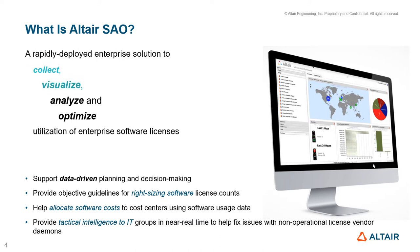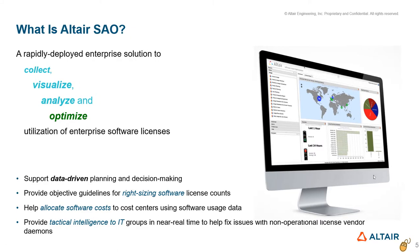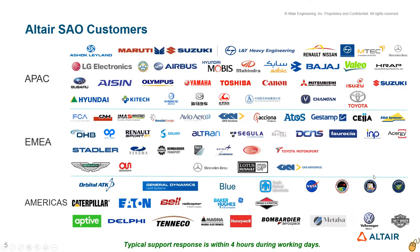SAO is built to collect, visualize, analyze, and optimize utilization of enterprise software licenses. SAO has been adopted by over 110 companies globally. Some installations track over 250 vendor daemons and 40,000 users. SAO is supported by a very responsive global team.